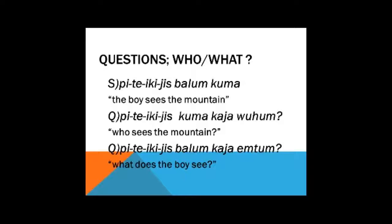Let's look at some examples: who or what? Beginning with the statement: pita yi kai is balum kuma, the boy sees the mountain. I want to say: who sees the mountain? I'm not going to mention balum, the boy, because that's what I don't know. I stick the term meaning who — kaya wohum — at the end: pita yi kai is kuma kaya wohum, who sees the mountain? Now, what does the boy see? I know it's a boy but don't know what he sees, so kuma is omitted. At the end I use kaya yemtum: pita yi kai yis balum kaya yemtum, what does the boy see?